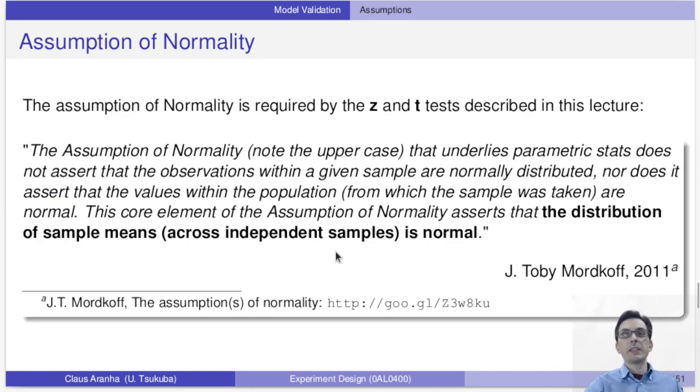Today I want to talk about the assumption of normality, which is the assumption that the distribution of the sample means that we calculate is roughly normal. In other words, if we calculate the sample mean of many samples in many experiments from the same population, we will obtain a normal curve of these results. If you remember the calculation of the z-statistic and the t-statistic that we used in the last video, we use the normal curve or the student t-curve to calculate the critical region, and that's why this assumption is necessary. Now in most cases the CLT guarantees that this assumption holds, but we can test it if necessary.